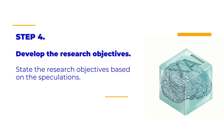The fourth step is to develop the research objectives. State the research objectives based on the speculations. These objectives are derived directly from the speculations based on the inconsistent statements identified earlier. Research objectives clearly outline the specific goals the study aims to achieve in order to address the speculative questions and reconcile the inconsistencies. By defining these objectives, the researcher provides a focused and structured plan for the study, ensuring that each objective is targeted towards resolving the identified problem and advancing understanding in the area of interest.